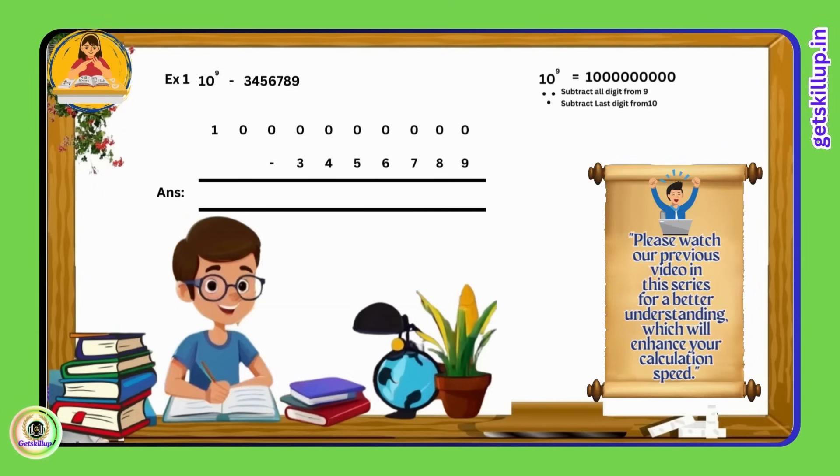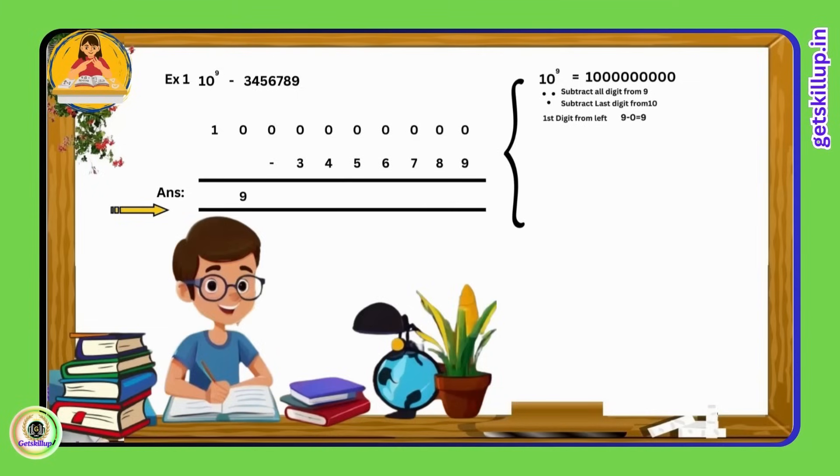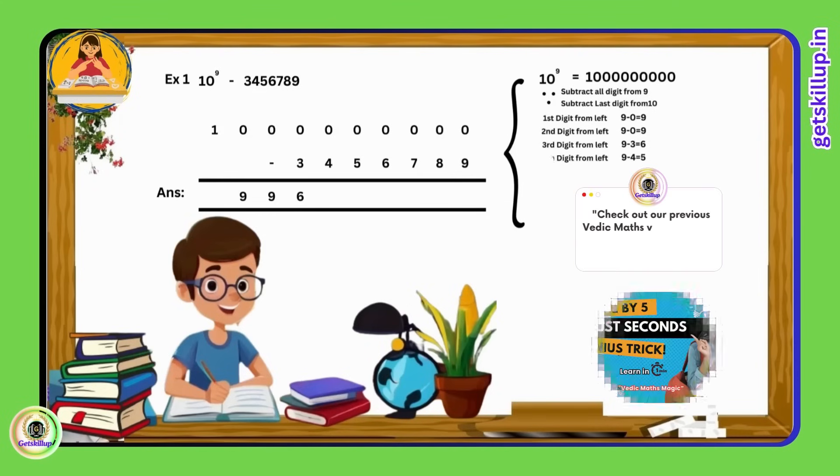Starting from the left, the first digit, 9 minus 0 becomes 9. The second digit, again, 9 minus 0 is 9. The third digit, 9 minus 3 becomes 6. The fourth digit, 9 minus 4 becomes 5.